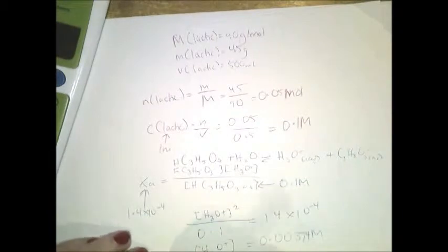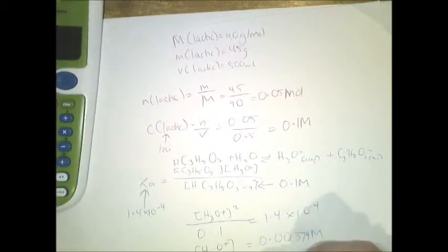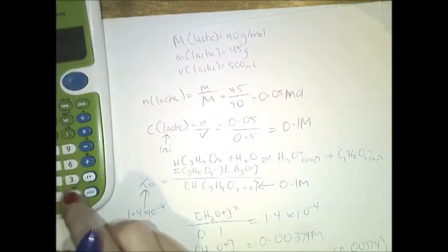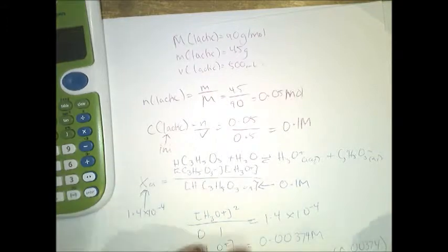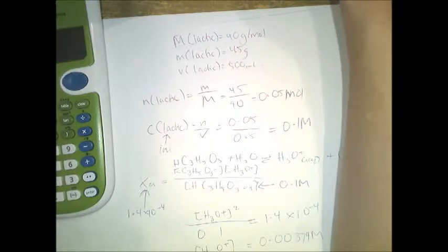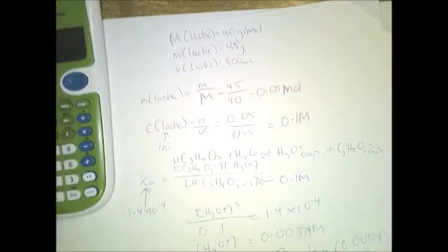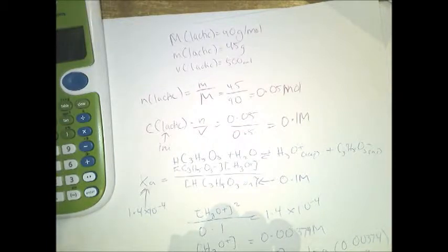pH equals negative log of concentration of H3O+. Note: the 10 in the Ka expression is assumed if you don't write it. pH equals negative log 0.0037 equals approximately 2.43. From the 2010 exam question 2, 52% of the state got this right.